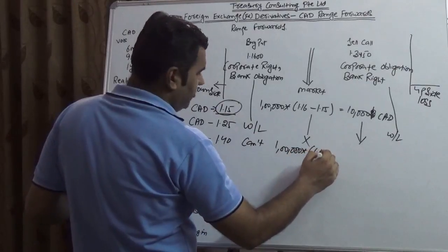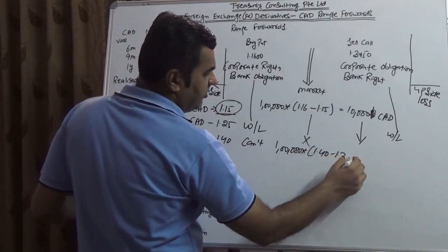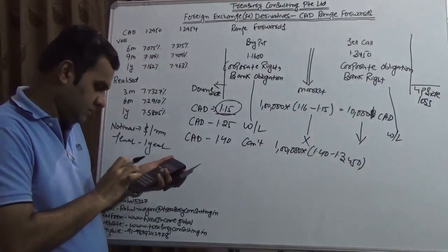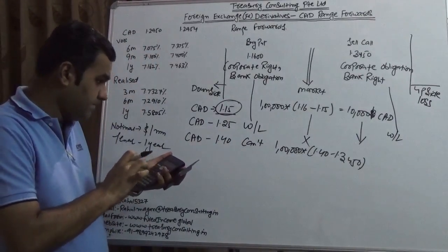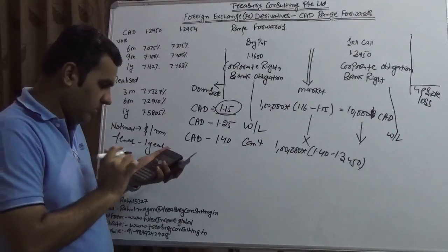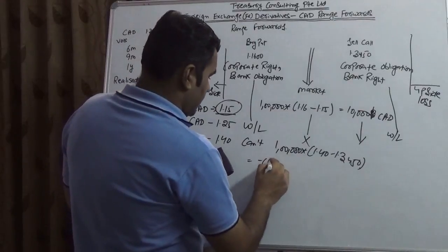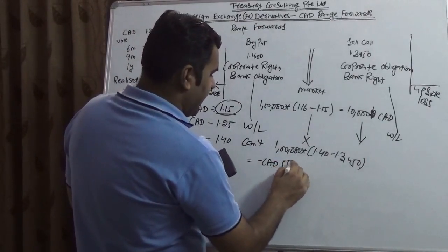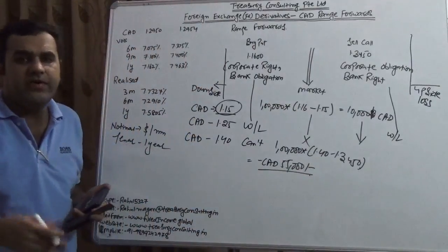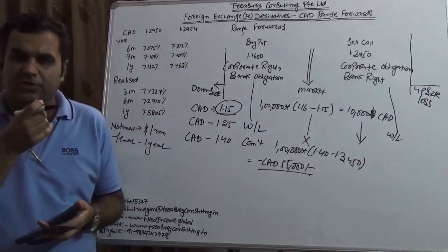So he would be losing one million notional into 1.40 minus 1.3450. So the net loss would be minus CAD 55,000. This is how it would be moving and this is the best way to protect yourself.